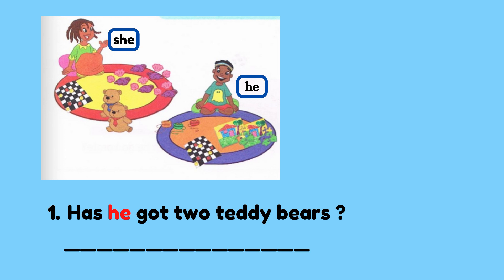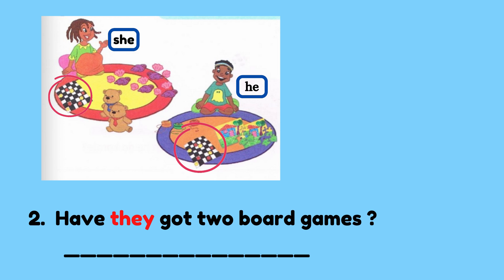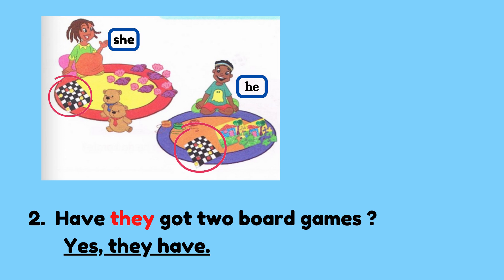Let's answer a few questions together. Number 1: has he got two teddy bears? As you can see in the red circle — seperti dalam bulatan merah — he hasn't got any teddy bears, so the answer should be no, he hasn't. Have they got two board games? As you can see in the picture, both of them have got board games. Can you guess the answer? The answer is yes, they have.